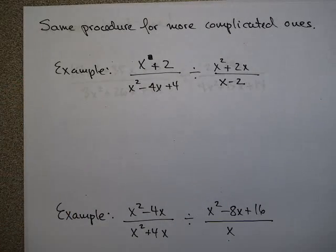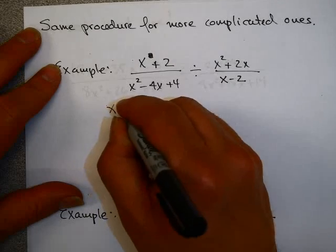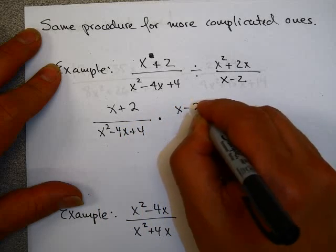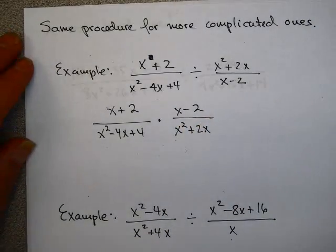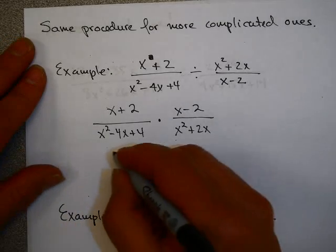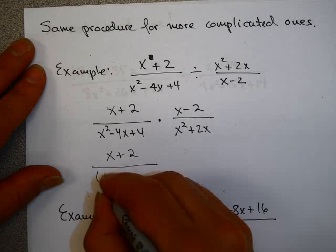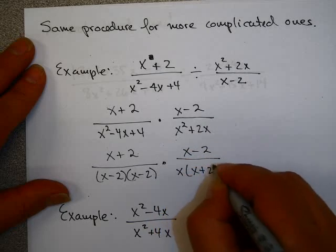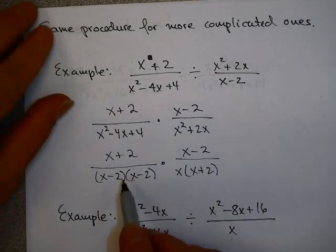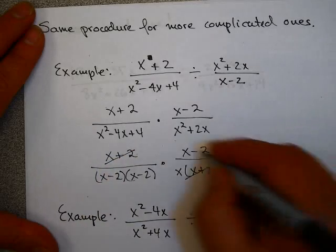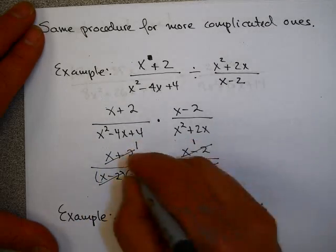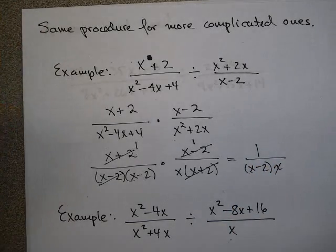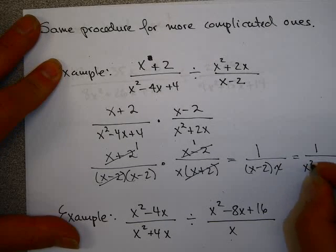Same procedure for more complicated ones — except they are more complicated. Step 1: change division to multiplication by the reciprocal. Step 2: factor all the numerators — they can't be factored — and factor the denominators. The first denominator factors as x minus 2 times x minus 2. The second denominator factors as x times x plus 2. Now I can divide out the x plus 2's and the x minus 2's. I'm left with 1 on top and x minus 2 times x on the bottom.